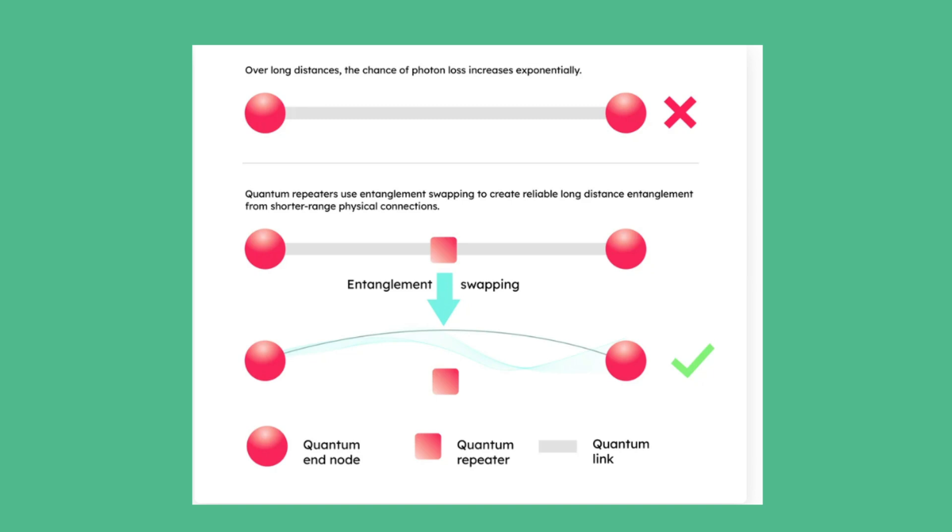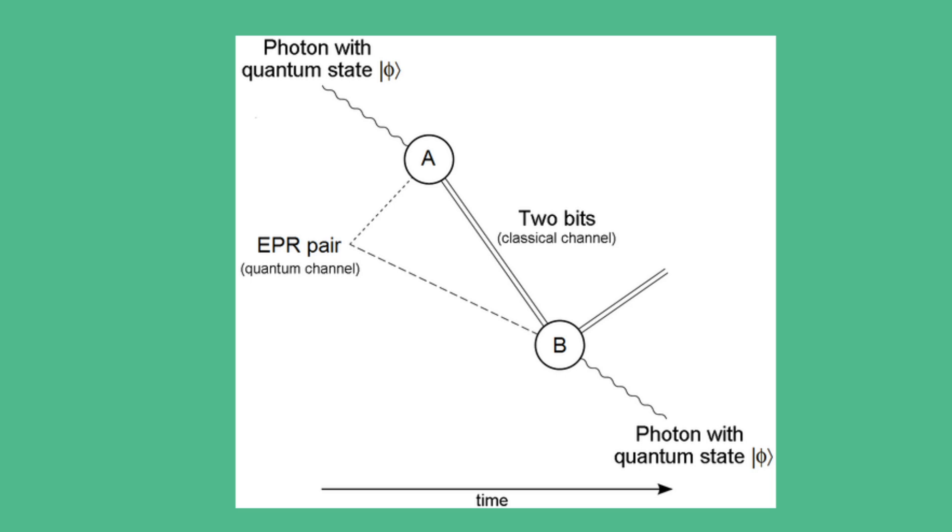Think of a quantum repeater like a relay runner in a race. Each repeater takes the incoming quantum information and teleports it to a fresh photon without reading it, because the moment you read quantum information, it collapses and disappears. This is where things get crazy. Teleportation in quantum physics doesn't mean teleporting matter. It means teleporting information using the weird connection called entanglement.